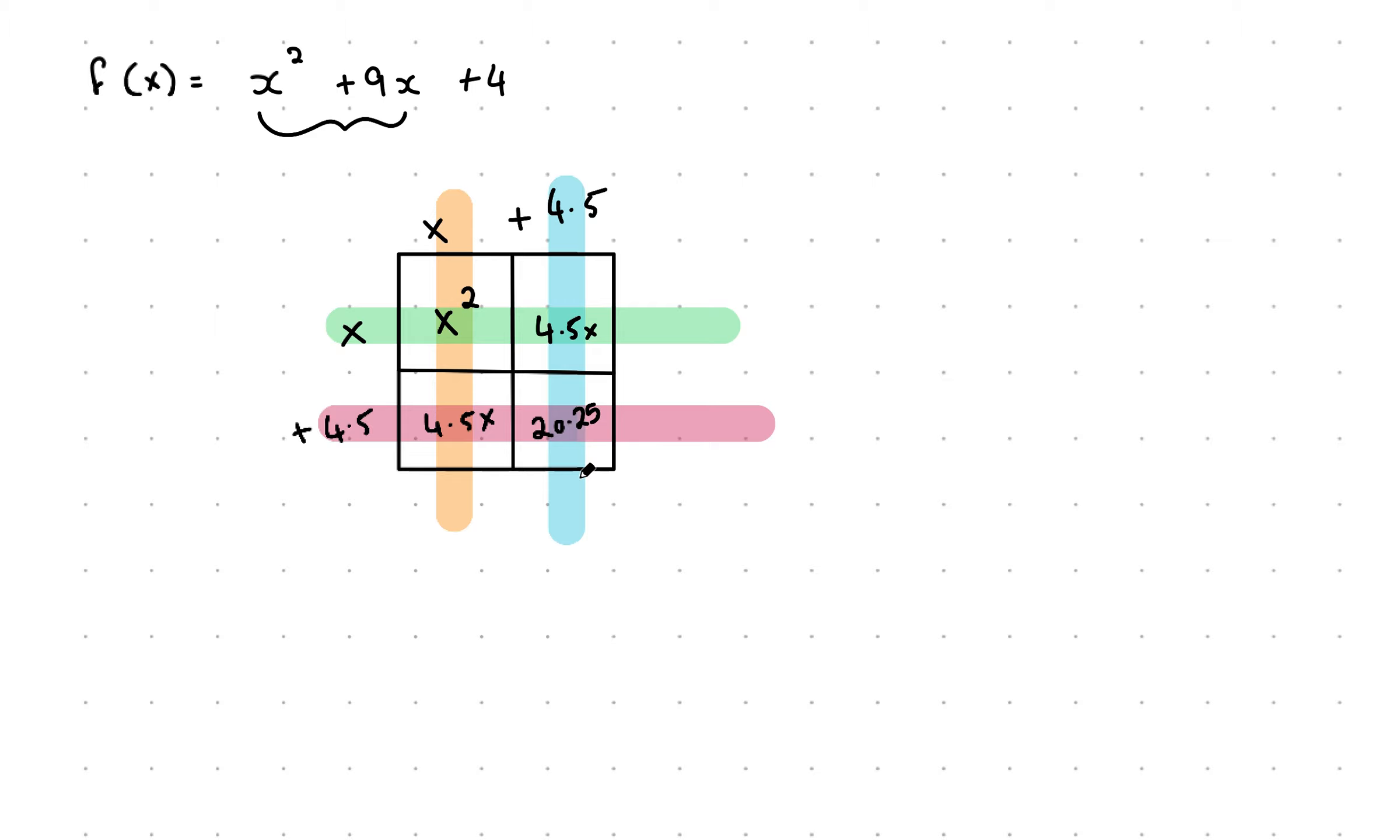So we can do it in decimals. If you prefer, you could write it as fractions. You can turn it into fractions at the end, if needs be. So what we're going to have now is we're going to write it out. So I'm going to write x squared plus those two added together will give us 9x plus 20.25. Or if you'd rather work in fractions, it's 81 all over 4. Now what I'm going to do is I can't just add in 81 over 4. So I have to subtract it to keep this function having the same value. And then we bring down our plus 4.